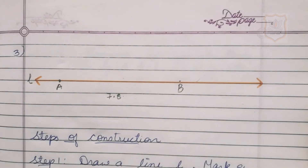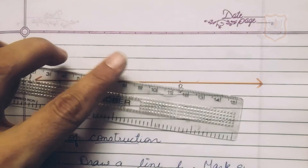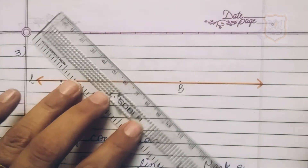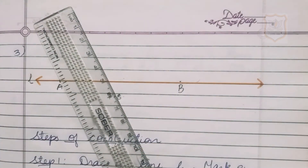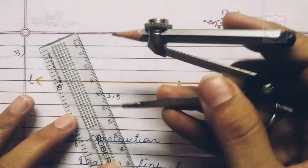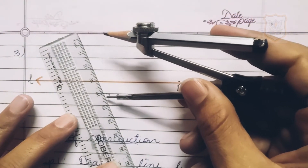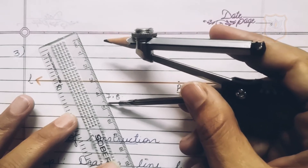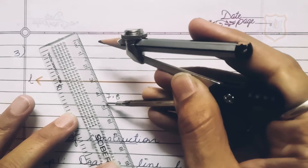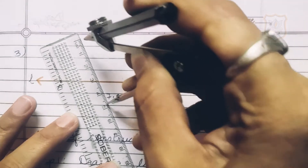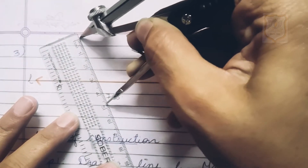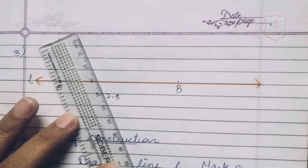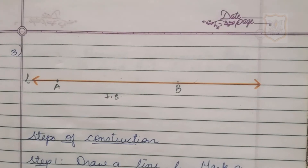Step 3: Open the compass arms so that the two ends are 4.7 centimeter apart. Place the pointer at 4.7 centimeter — counting 4.1, 4.2, 4.3, 4.4, 4.5, 4.6, 4.7 — and the pencil tip at 0. In this way we open the compass.